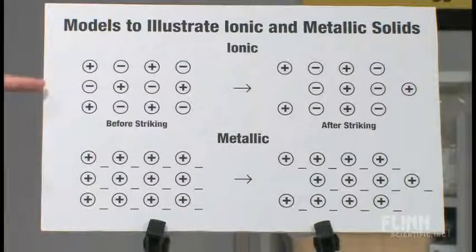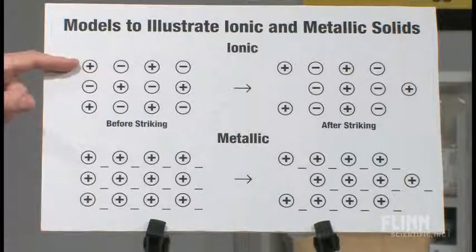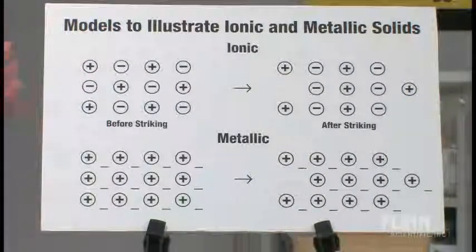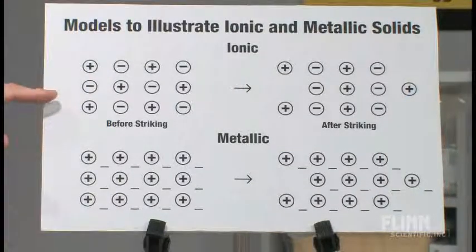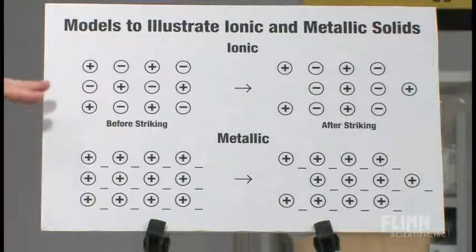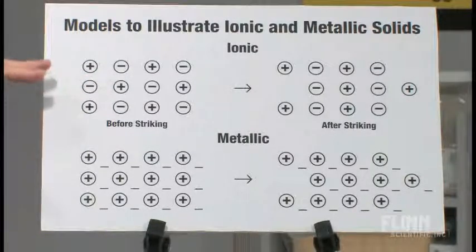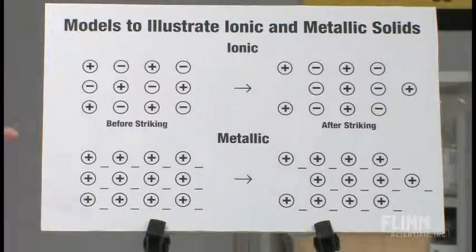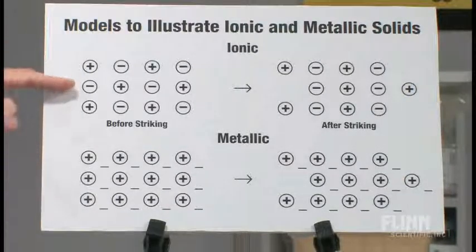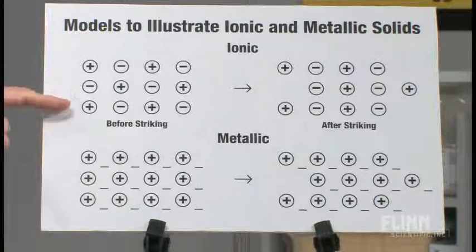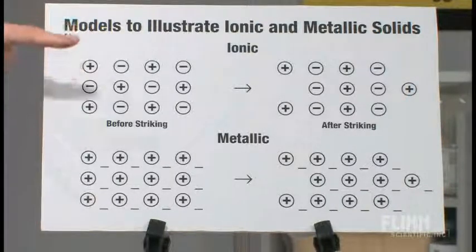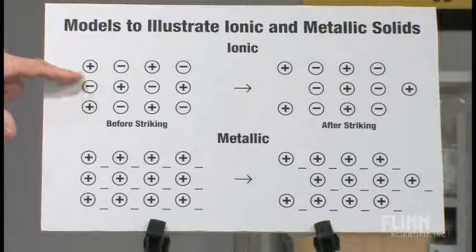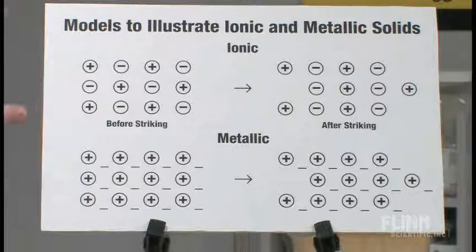The top example is one for ionic bonding, where we have alternating positive and negative charged ions. And before striking that, if we have, in theory, a perfectly aligned crystal, which doesn't exist in real life, but if we did, we'd have an arrangement such as this. And then on a second layer, we'd have a negative charge on top of the positive charge and a positive on top of the negative in alternating rows.